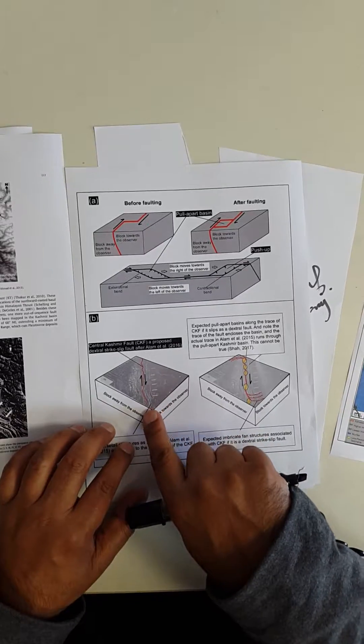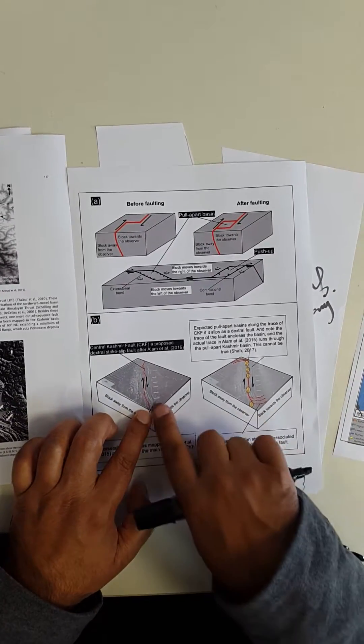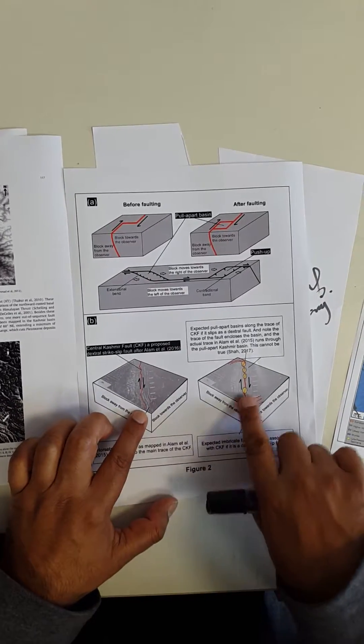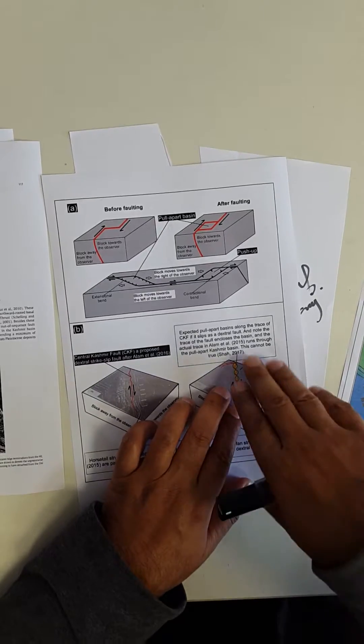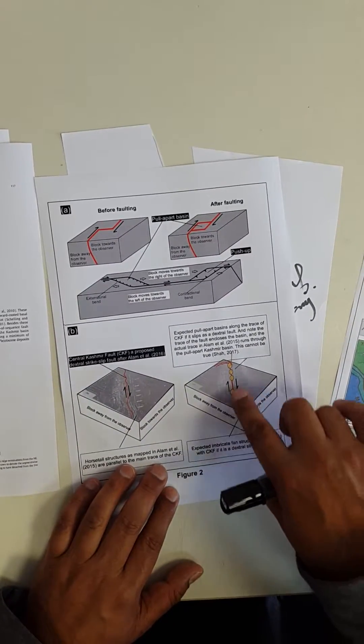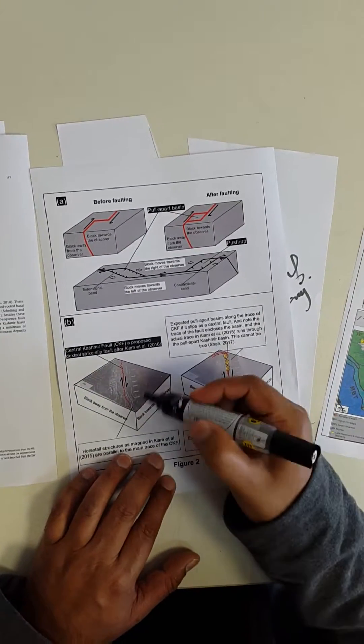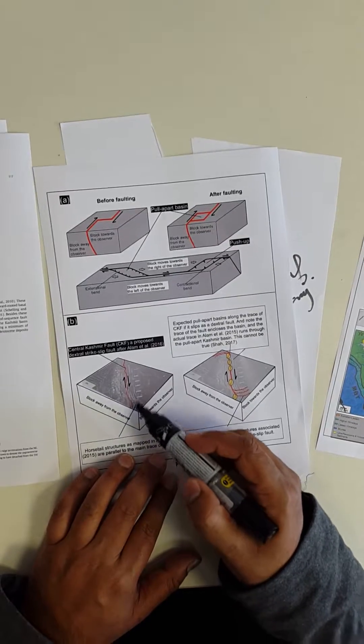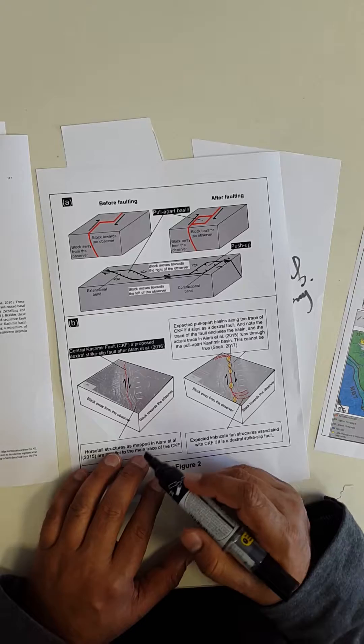If the fault terminates, it can form fans, but those fans can never form like this. They will be something like this because here the material comes in and goes against the state. So you can have thrusts with two different polarities and definitely not the things that they have mapped as these fans, which I think is simply not possible.